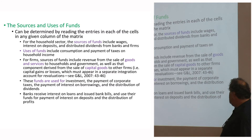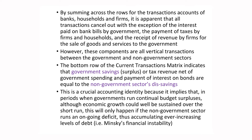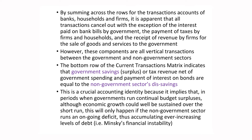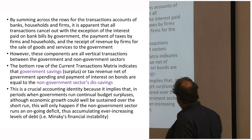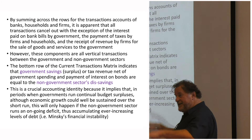Banks receive interest on loans and issue bank bills; they use funds for payment of interest on deposits and distribution of profits. When you sum across all rows of the transactions accounts, all transactions cancel out — with the exception of interest paid on bank bills by government, taxes paid by firms and households, and revenue received by firms for sales to government. Those are the vertical transactions.